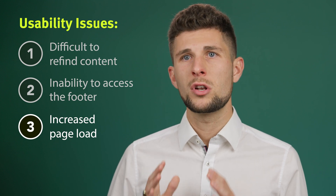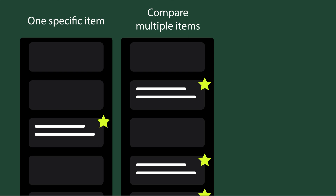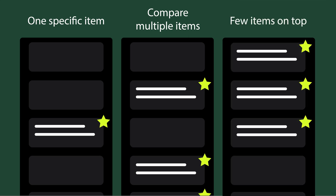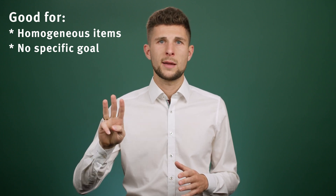In general, we do not recommend using infinite scrolling if your users try to find something specific on your site, such as a specific article or item. Additionally, avoid this design pattern if your users will want to compare multiple items within a long list, or if they tend to just focus on a few items at the top of a list. Infinite scrolling typically works best for situations where users will want to scroll through homogeneous items with no particular task or goal in mind — for example, in entertainment, news, or social media apps.